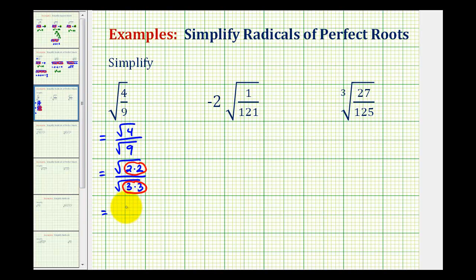Therefore, the square root of 4 is equal to 2, and the square root of 9 is equal to 3. So this simplifies to two-thirds.